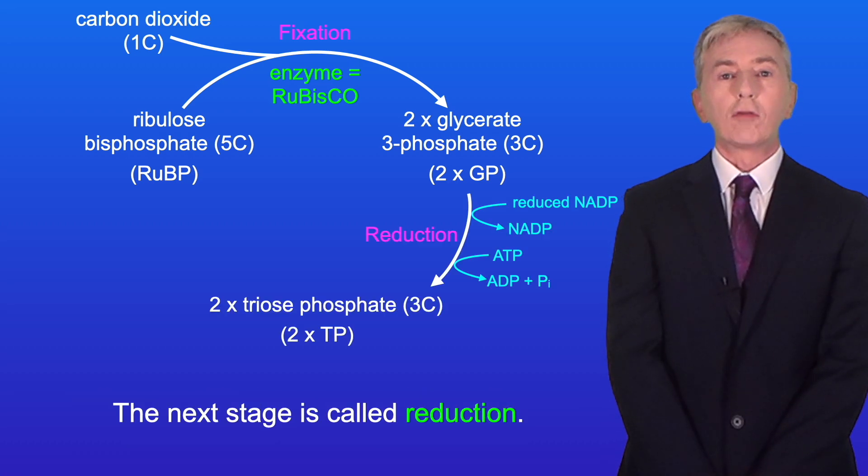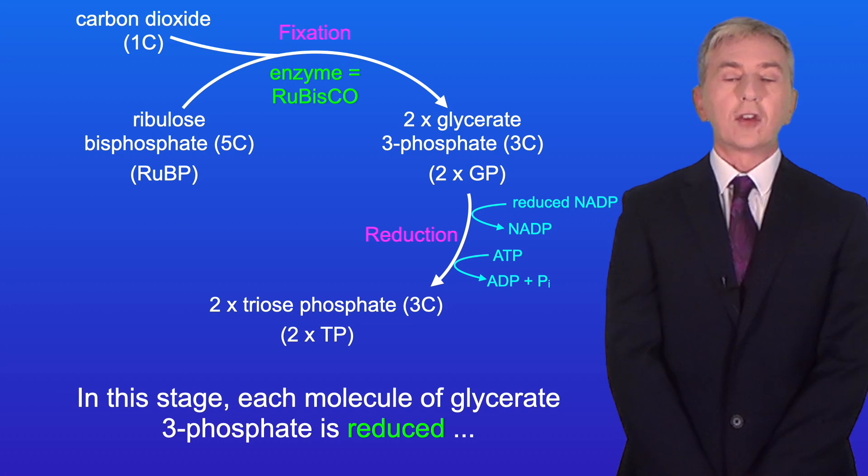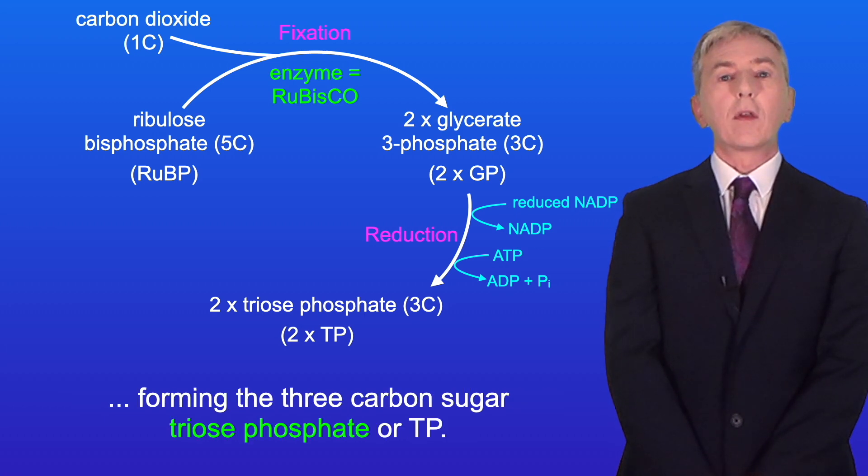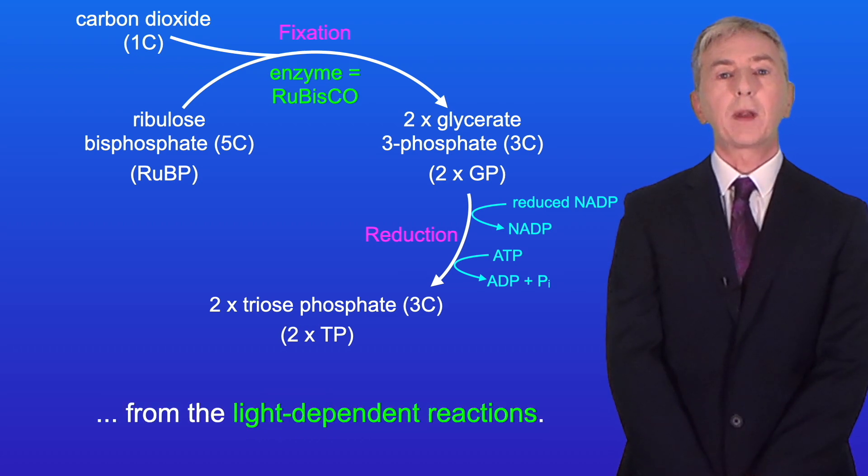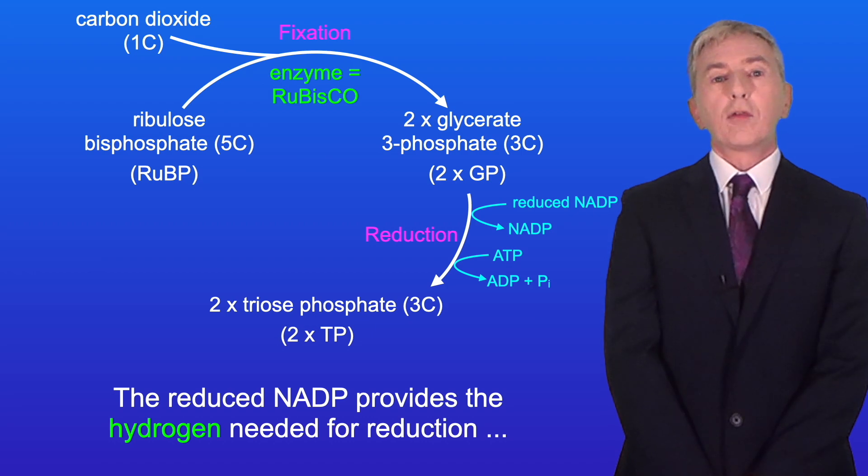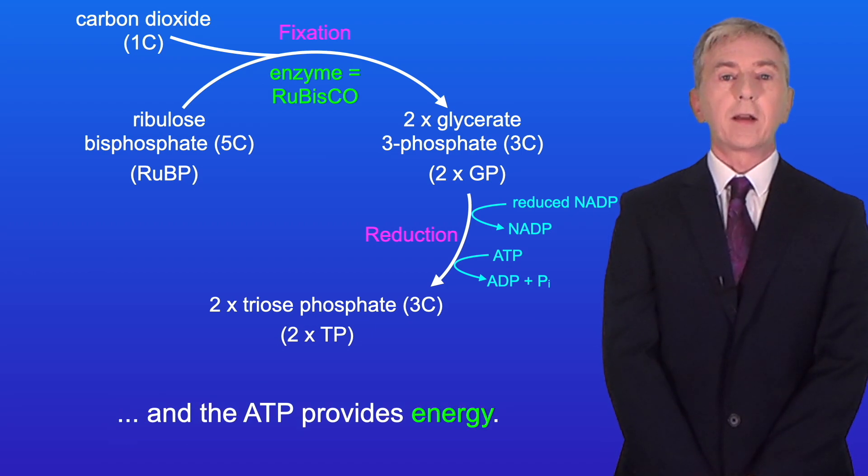The next stage is called reduction. In this stage, each molecule of glycerate 3-phosphate is reduced, forming the three-carbon sugar triose phosphate, or TP. This reaction uses reduced NADP and ATP from the light-dependent reactions. The reduced NADP provides the hydrogen needed for reduction, and the ATP provides energy.